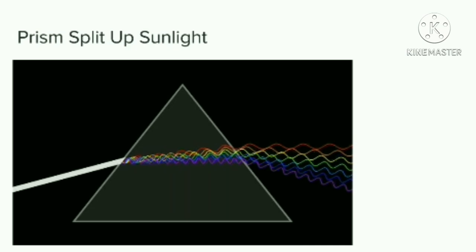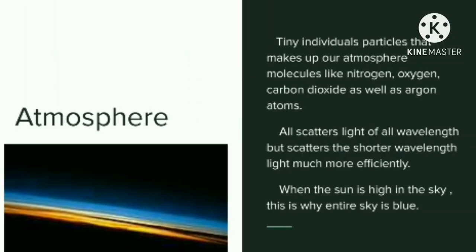The second factor is very important to understand: the atmosphere. The invisible particles that make up our atmosphere include molecular gases like nitrogen, oxygen, water, carbon dioxide, as well as argon atoms. All of these scatter light of many different wavelengths, but they scatter the shorter wavelength light much more efficiently.